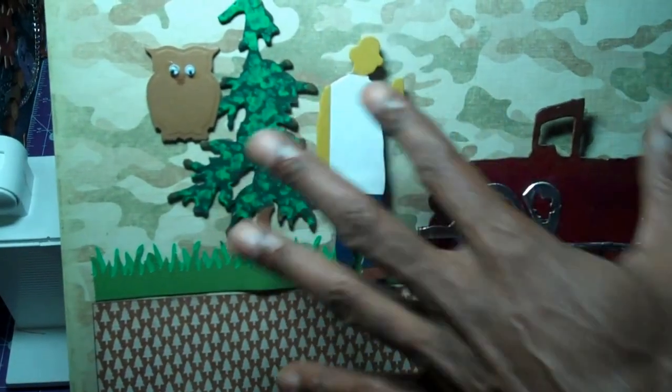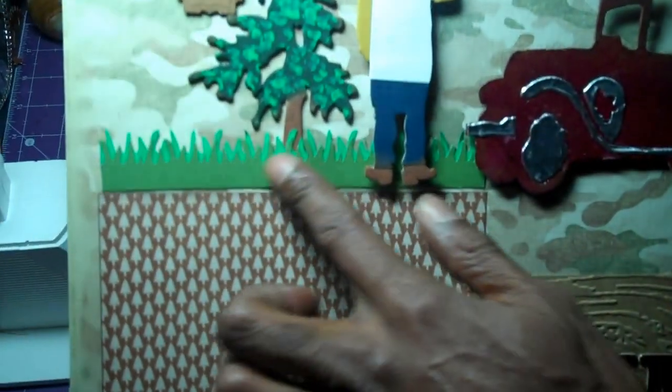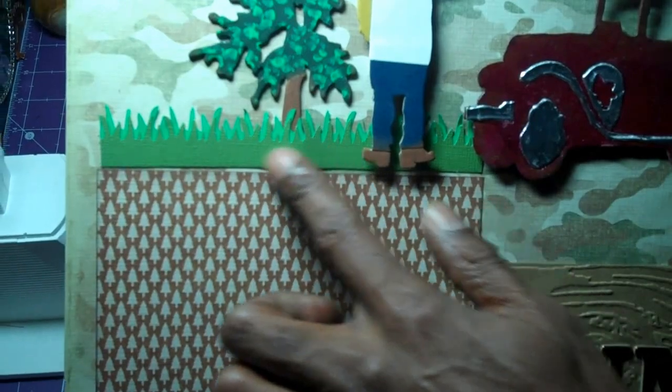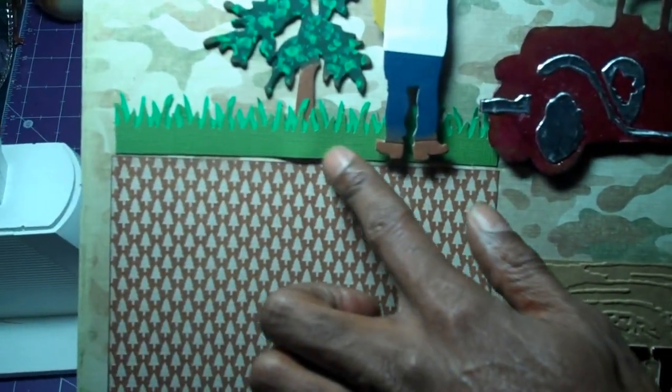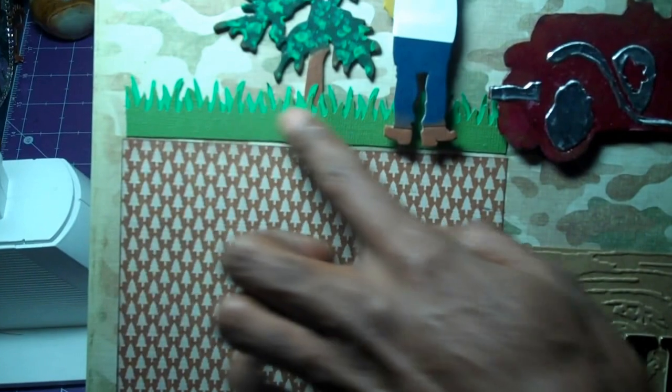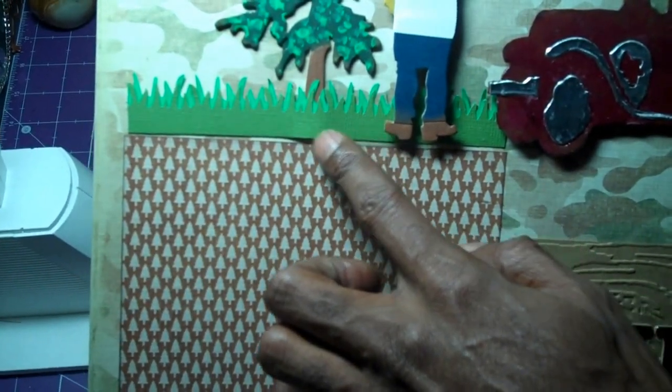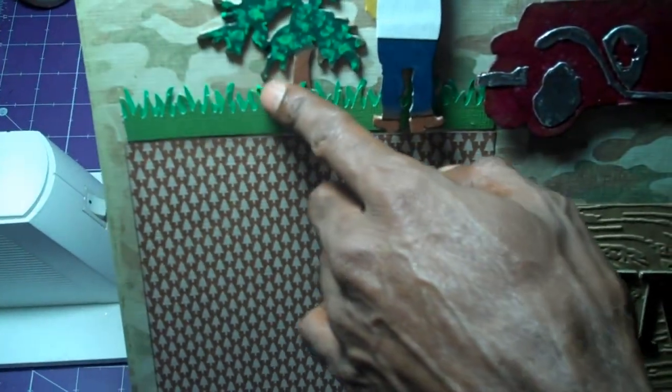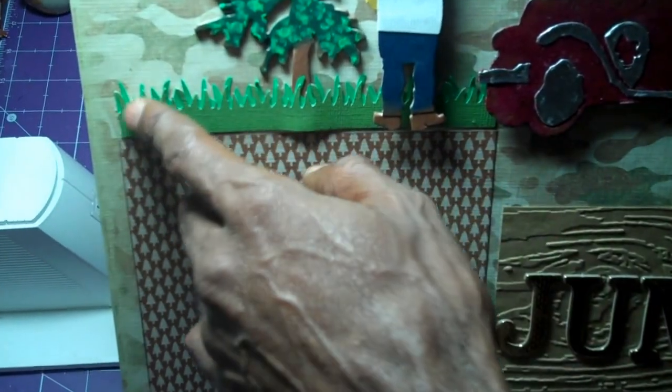And this is a border punch from Martha Stewart. No, EK Success. And it's the tree border. And so what I did is that I used that as my grass.